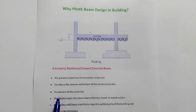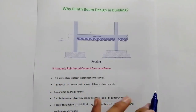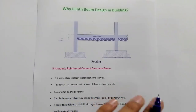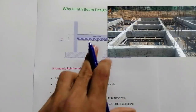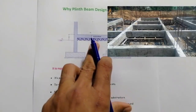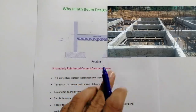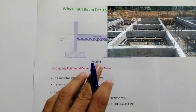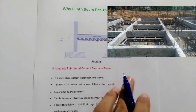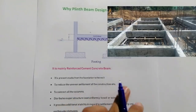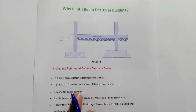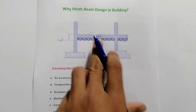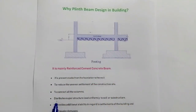The third benefit is also very important: plinth beam connects all the columns. If we don't provide plinth beam in the building, the columns — which are very important in building construction — are not tied together. Plinth beam connects all the columns with each other, so therefore we provide it.